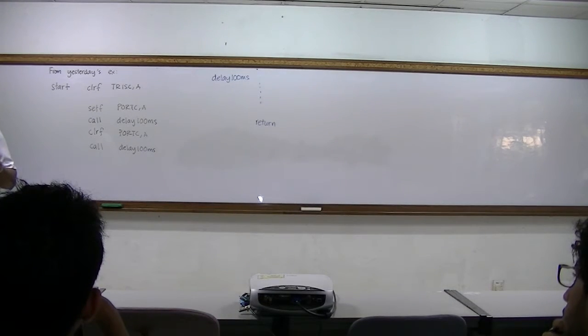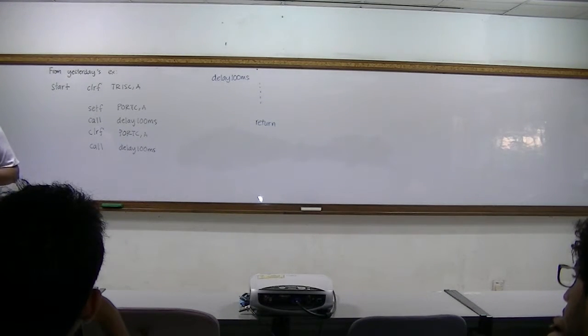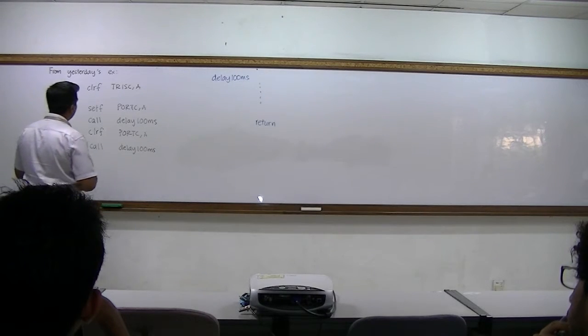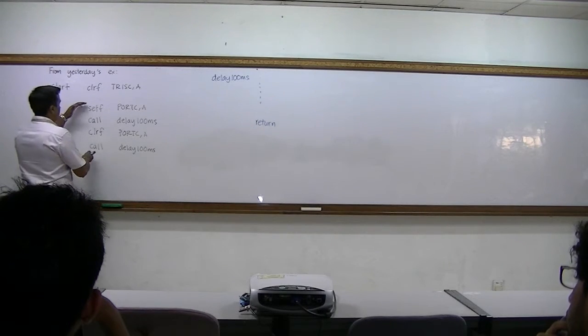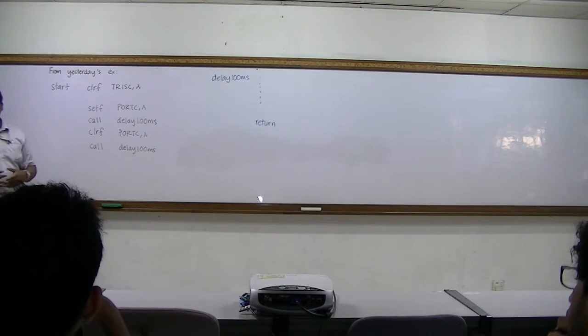Now let's say we want it to blink for a number of times only — on and off as one set. So let's say we just want it to blink only ten times, for example. That means this main program we are going to put inside a finite loop.